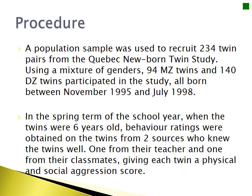A population sample was used and they recruited 234 twin pairs. They used a mixture of genders — 94 monozygotic twins and 140 dizygotic twins — who participated in the study. They were all born between November 1995 and July 1998.